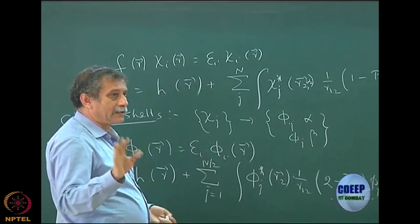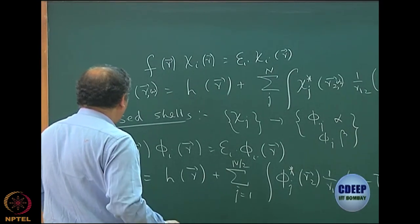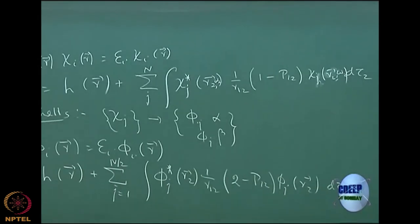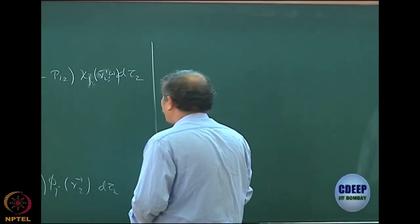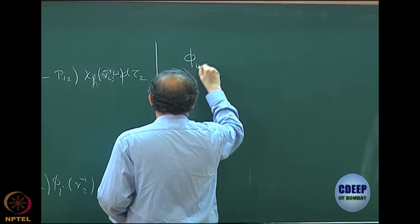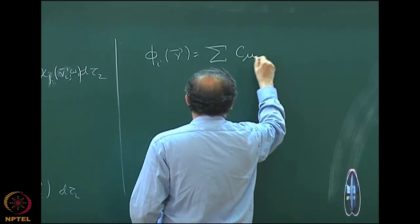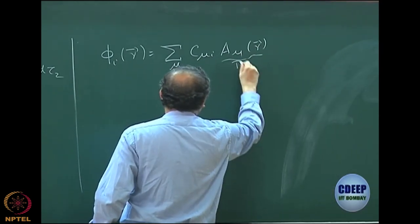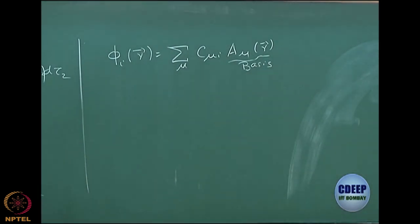So all the spin orbitals should be written as r and omega. Here we are writing only in terms of r, so the spin has been integrated out. This becomes the canonical Hartree-Fock equation for the space orbitals for closed-shell systems. After that, for molecules, we expanded each phi_i(r) as a linear combination of atomic orbitals — some basis which we call a_mu(r) — this is a known basis of known functions.